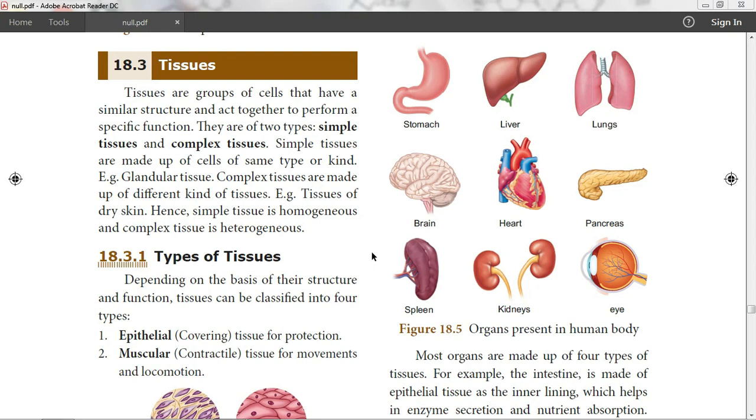Simple tissue is made up of cells of same type or kind. Example: glandular tissue. Complex tissue is made up of different kinds of tissues. Example: tissue of dry skin.